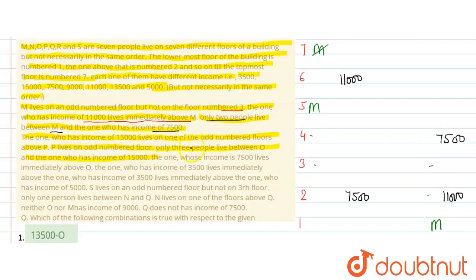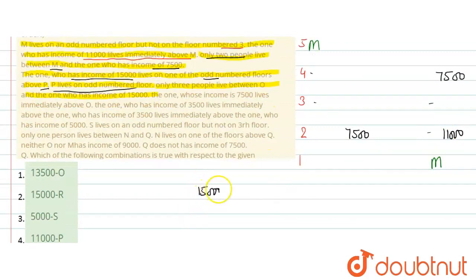Next given is the one whose income is 15000 lives on one of the odd numbered floors above P, and P also lives on odd numbered floor. So the person whose salary is 15000 will come somewhere above P, and both will come on odd numbered floors.